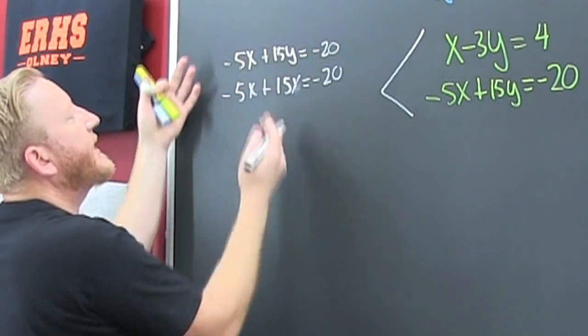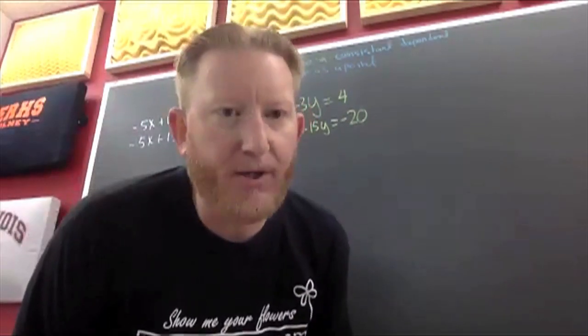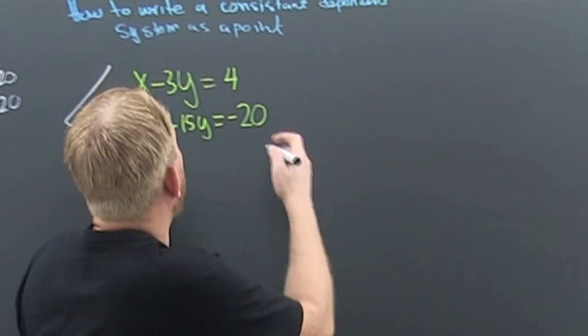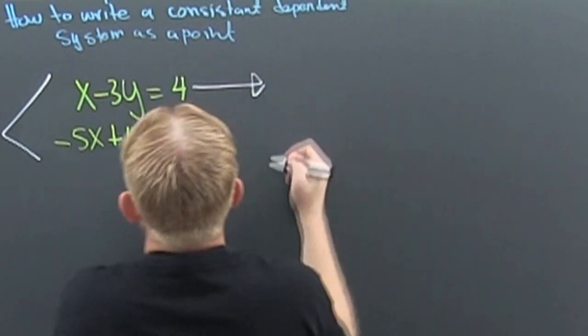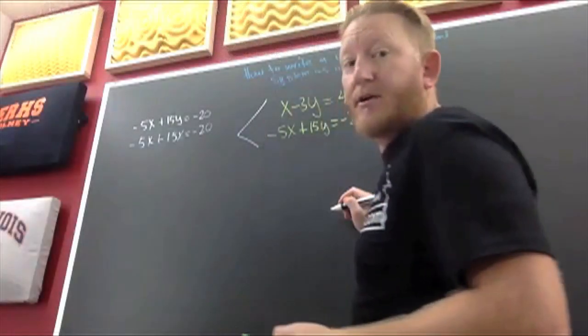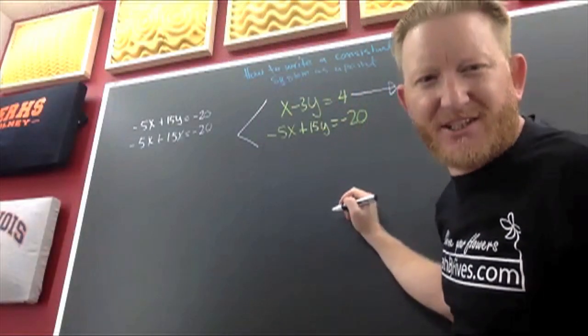So pick one, doesn't matter which one because they are the same. So I'll just take the top one and I want to solve it for the dependent variable. Now I could solve it for the independent variable and that wouldn't be wrong, it's just weird.